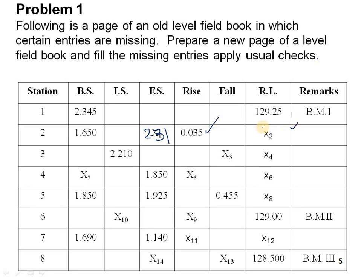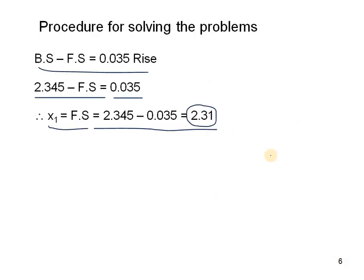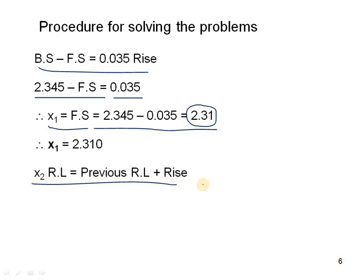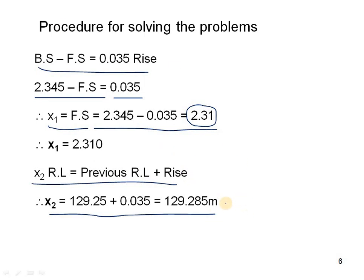To find X2 (the RL of station 2), we use: previous RL plus rise = 129.25 plus 0.035 = 129.285. So X2 = 129.285.